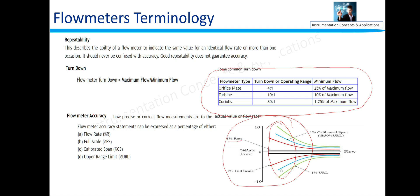And for full scale, the error is very less. And if the accuracy is given in terms of URL error, then the error will be less at lower stage.